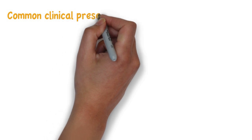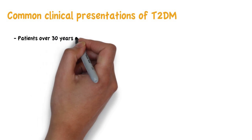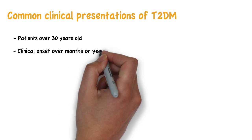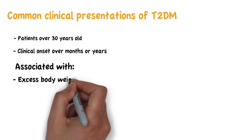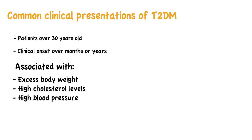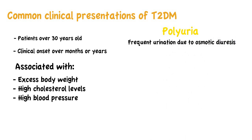Now for the clinical presentations of type 2 diabetes. It is usually diagnosed in patients over 30 years old and the clinical onset may be over months or years, especially in older patients. It is often associated with excess body weight, high cholesterol levels, and high blood pressure. Patients will usually present with polyuria, meaning frequent urination, due to osmotic diuresis — where glucose is excreted in urine and, due to the osmotic pressure, water follows, leading to an increase in urine output.